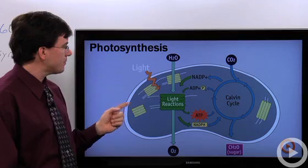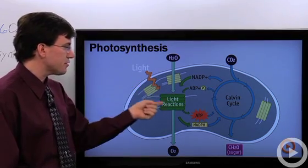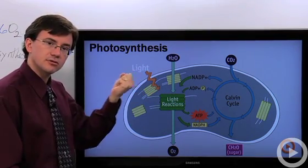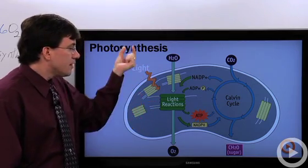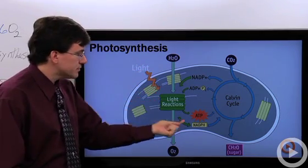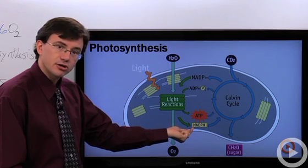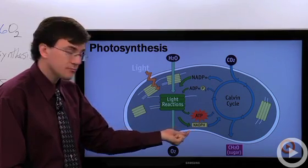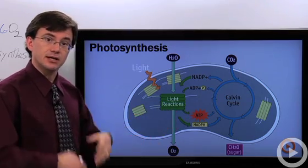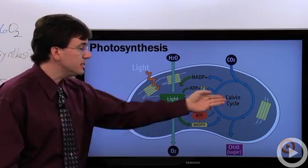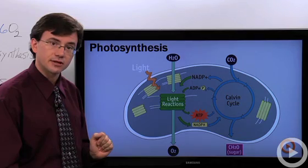So basically what happens is that the light reactions on the thylakoid membrane, you've got special molecules that can absorb light. Using that energy, they strip off electrons and put them onto a high-energy electron carrier called NADPH. They also use the energy of those electrons to make a molecule called ATP, an energy molecule that's going to be needed later on in the Calvin cycle.